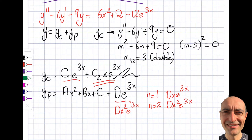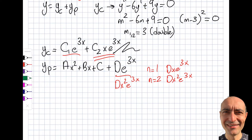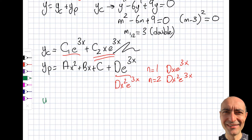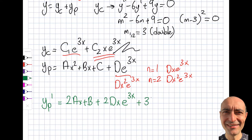Let's go ahead and write yp'. Looking at the original equation I have a second derivative and a first derivative, so I need both. yp' equals (2ax + b) plus, by the chain rule, 2dx·e^(3x) plus 3d·x²·e^(3x).